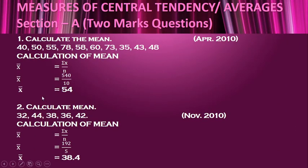While taking up this question, we are given x values only. So it is individual data. For individual data, x̄ = σx / n. σx is nothing but the total of the x values given, which is 540, and n, the number of values, is 10. On solving, x̄ is 54.